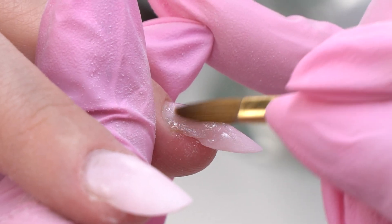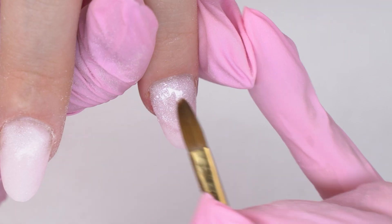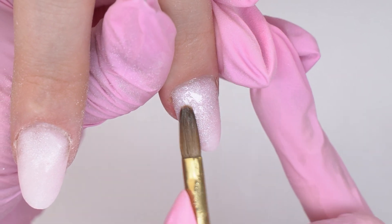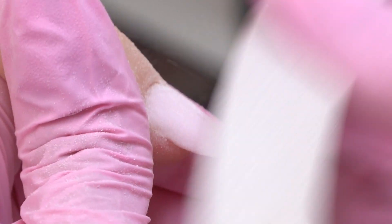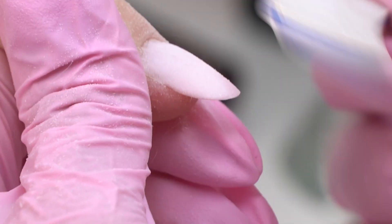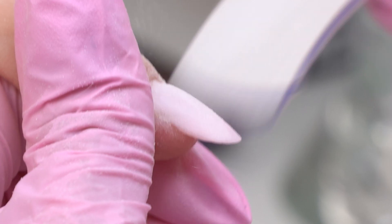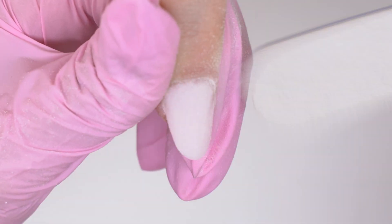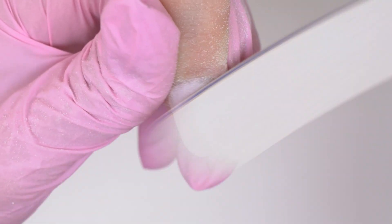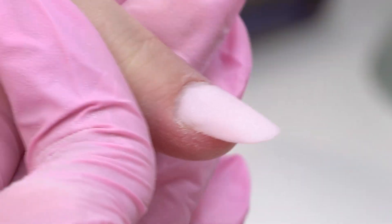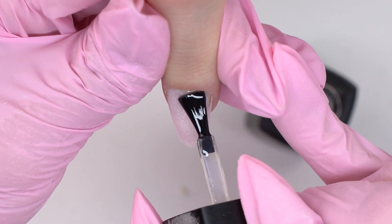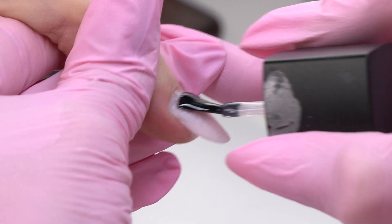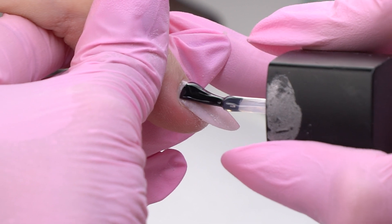Now we patch up all the holes with the Acrygel, send the nails to cure, and then file them again to avoid cracks. Now I wipe off the dust and do a layer of top coat. I think this Acrygel looks amazing on its own. Such a soft and delicate shiny look.